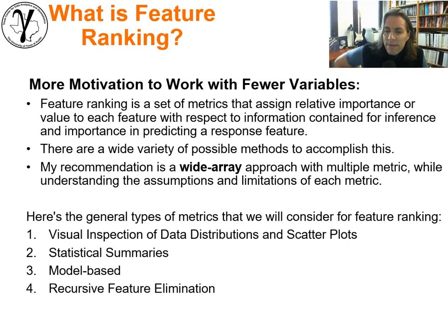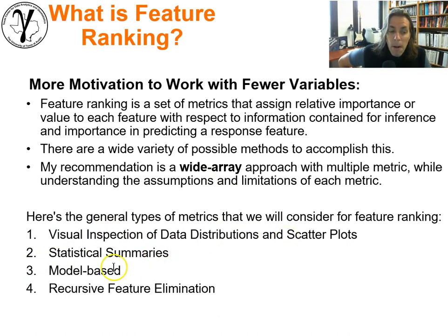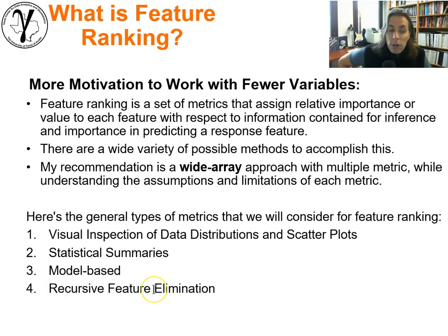The general types of feature ranking break up into these groups: visual inspection of data distribution and scatter plots, statistical summaries, model-based methods, and recursive feature elimination — four different categories we're going to cover.